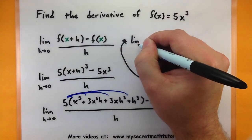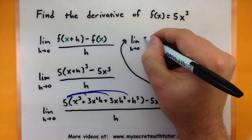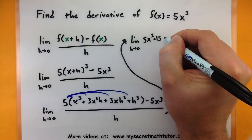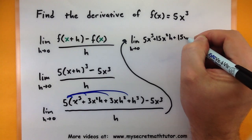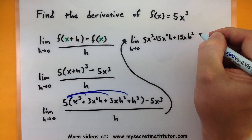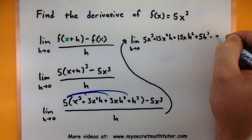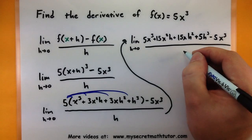So the limit as h goes to zero: 5x cubed plus 15x squared h plus 15x h squared plus 5h cubed minus 5x cubed all over h.